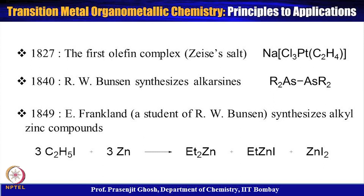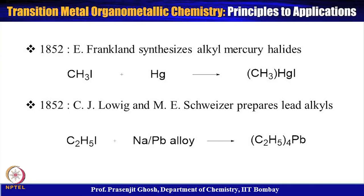Subsequently, in 1840, R.W. Bunsen synthesized dialkyl diarsene. Also, this period saw the synthesis of diethyl zinc from the reaction of ethyl iodide with zinc, giving diethyl zinc, ethyl zinc iodide, and zinc iodide. This reaction is similar to an oxidative addition reaction, where an alkyl halide adds to a zero-valent metal center. This was probably one of the first methods used to synthesize organometallic compounds, and oxidative addition later became an important step in many catalytic processes.